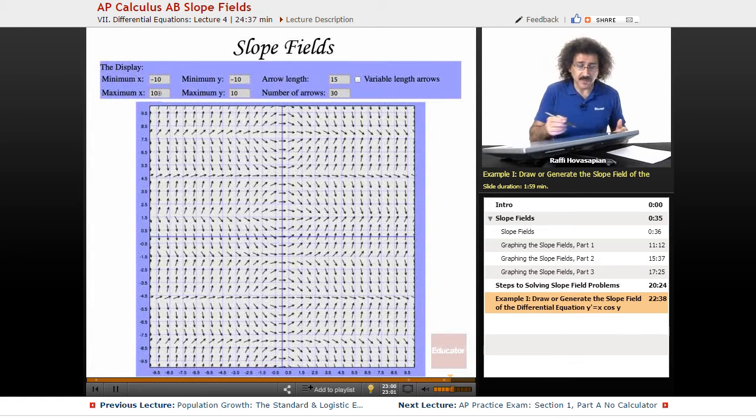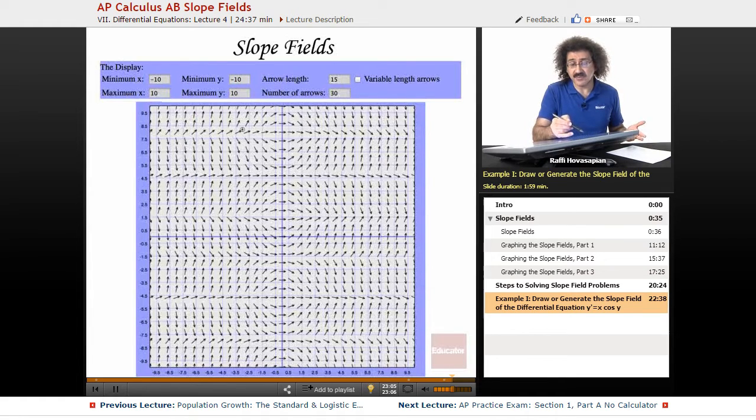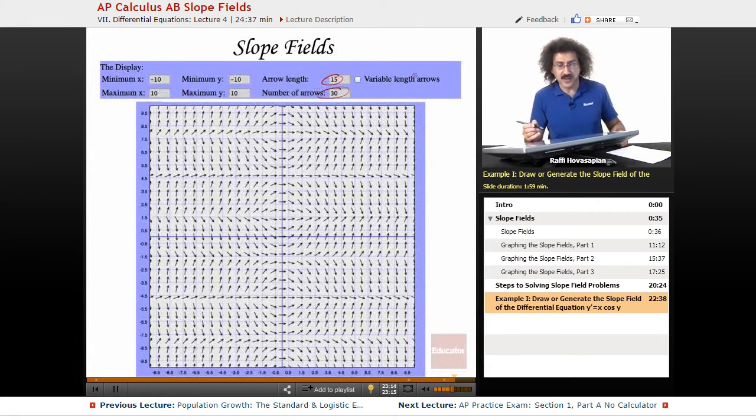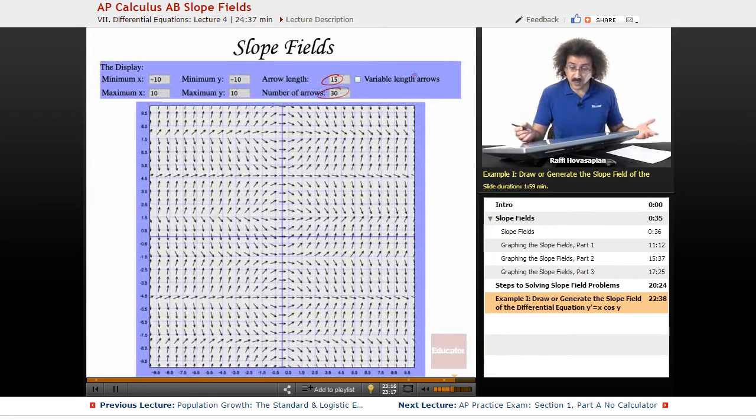That's the slope field generator. I set my x max and min to negative 10 to 10. I did negative 10 to 10 on y. I picked an arrow length of 15, and I picked 30 arrows per horizontal and vertical distance, and I decided not to go with the variable length arrows, and this is what I got.